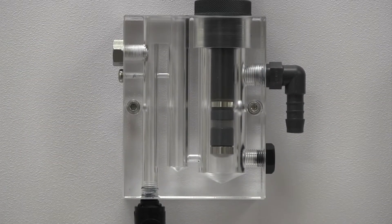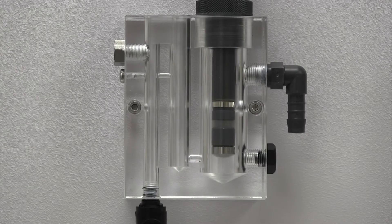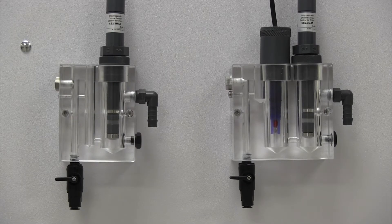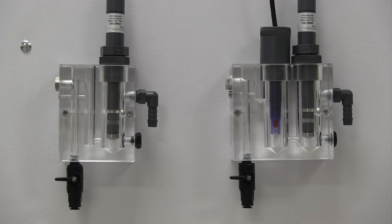The sensor flow cells are essential to the proper performance of the analyzers. A dual chamber model is also available for use with a second probe, such as pH or ORP.